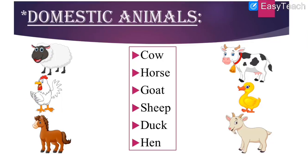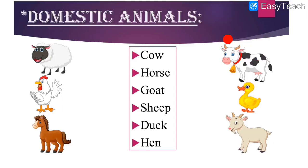Let us begin. First: C-O-W, cow. Where can you see the cow? We can see cow on the right hand side. One, two, three — here is the cow, black and white color. Let us match cow with its picture. This is a cow which gives us milk and eats grass.